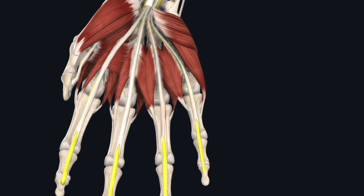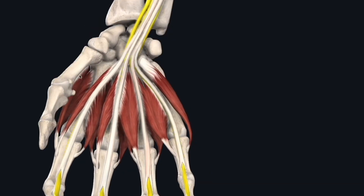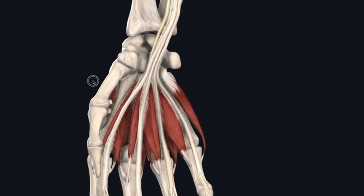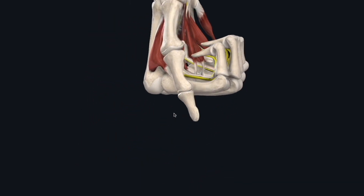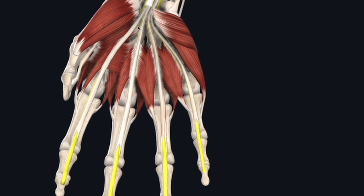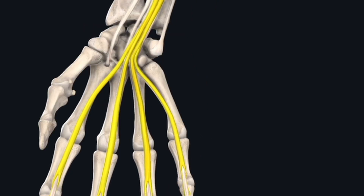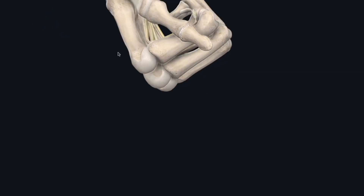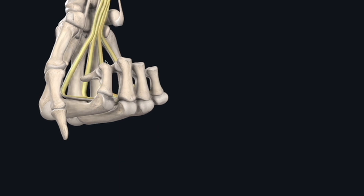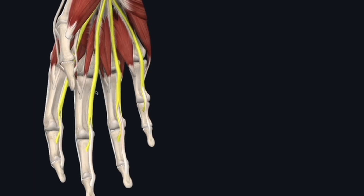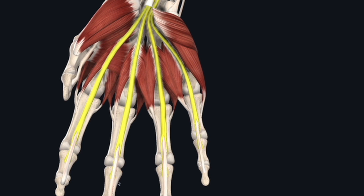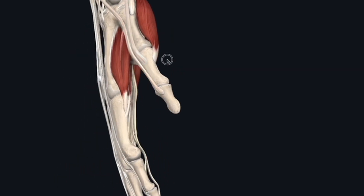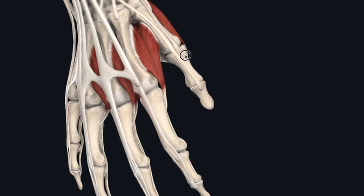Here are your long flexors — you can see they provide finger flexion, and they insert pretty distally. The flexor digitorum superficialis provides some wrist flexion but also finger flexion, and they insert onto the middle segment — the middle phalanx.